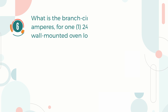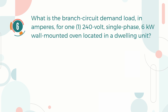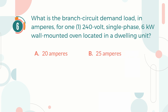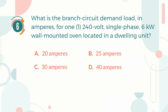Number 6. What is the branch circuit demand load in amperes for one 240-volt single-phase, 6 kW wall-mounted oven located in a dwelling unit? A. 20 amperes. B. 25 amperes. C. 30 amperes. D. 40 amperes.